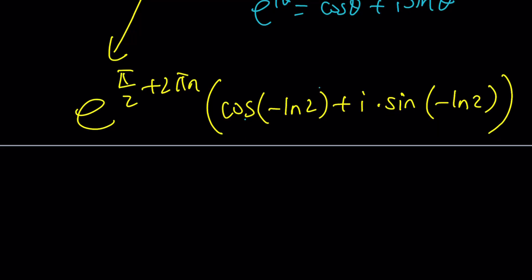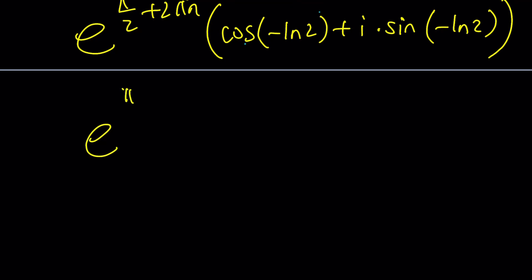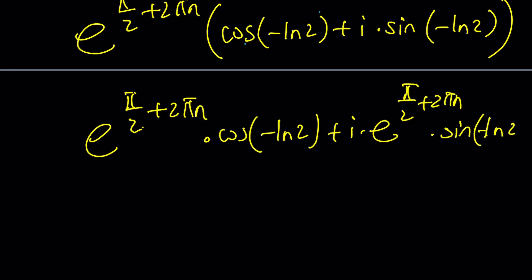And then when you distribute, I know some people are going to be like, okay, you still haven't written in the A plus B? You want me to distribute? I can, fine. Times cosine negative LN2 plus I times E to the power pi over 2 plus 2 pi N, just repeating the same factor, times sine of negative LN2. Now, this should be in the A plus B I form. This is my A, this is my B.